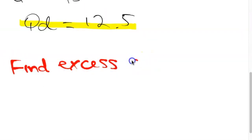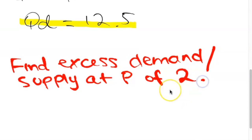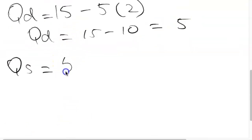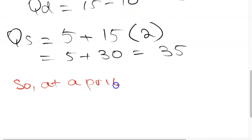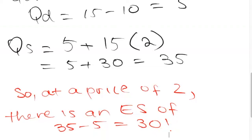There are also Paper 3 questions that give a certain price and ask you to find excess demand or supply. Here we're not looking at equilibrium but at a situation where either demand or supply is greater. For example, at a price of 2, input 2 into both the quantity demanded and quantity supplied functions. If quantity demanded is 5 and quantity supplied is 35, then because quantity supplied exceeds quantity demanded we have excess supply — a surplus — of 35 minus 5, which equals 30.